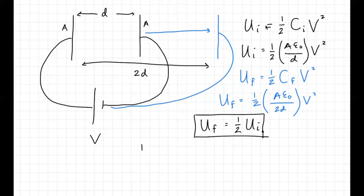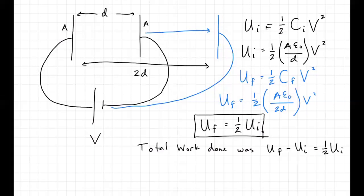So the final potential energy stored is half of the initial potential energy. The work done is ΔU = Uf minus Ui = negative one half Ui. Was it easy or hard to do this? It was hard, because one plate has positive charge and one has negative charge — if you try to pull them apart, there's a force of attraction between them, so it costs you something. And you lose some potential energy as a result.